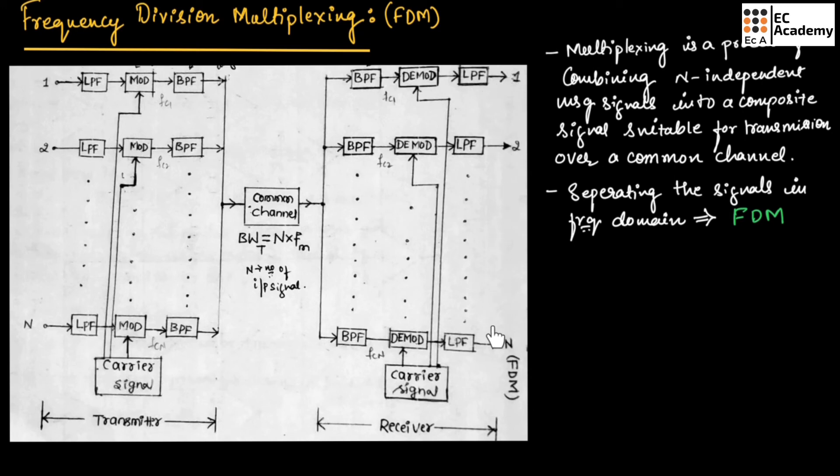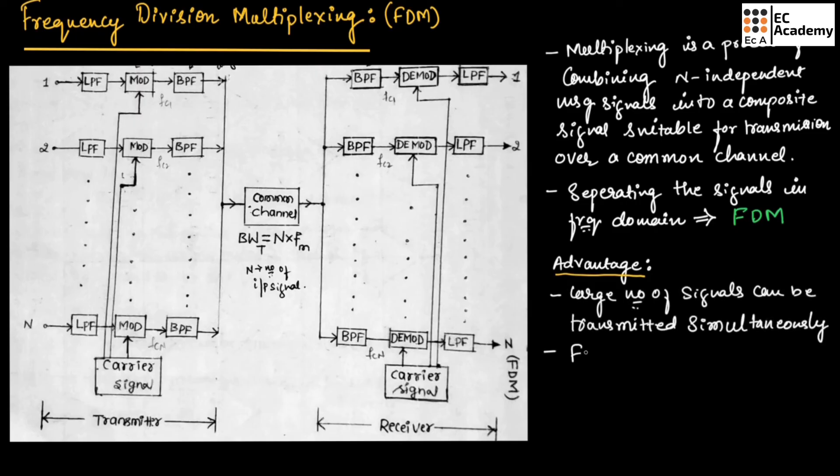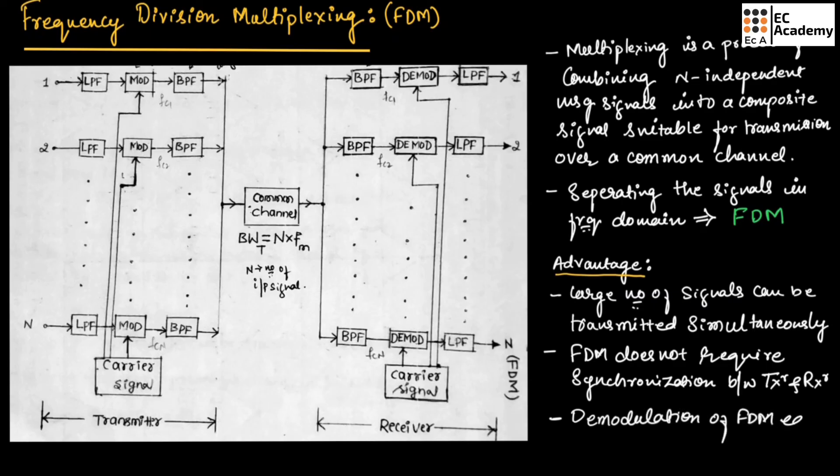The advantage of frequency division multiplexing is that a large number of signals can be transmitted simultaneously. FDM does not require synchronization between transmitter and receiver, and demodulation of FDM is easy.